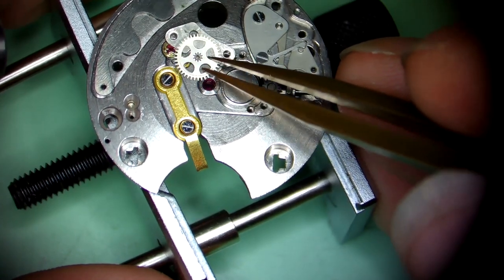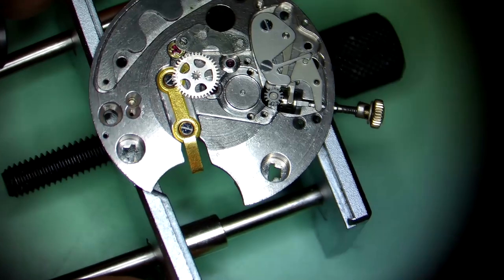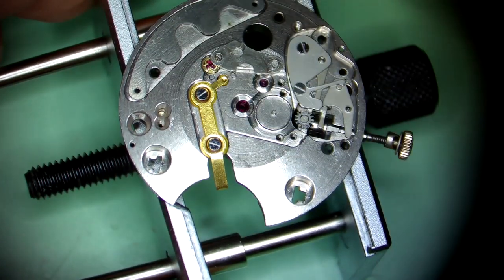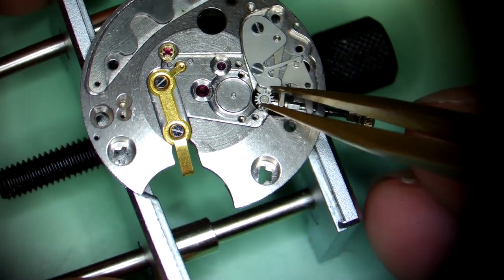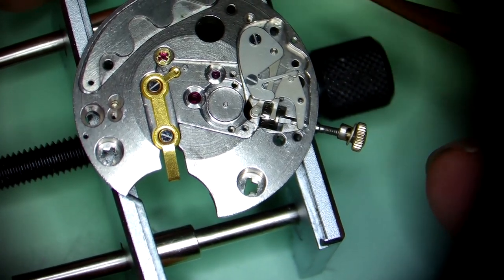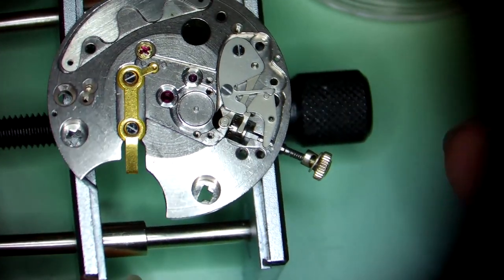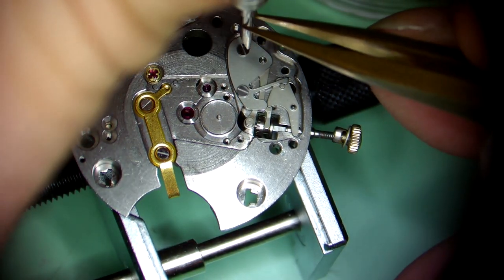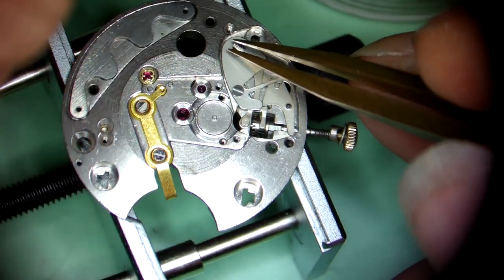This movement was doused in oil. I've rarely seen a movement so covered in oil. Every piece is shiny with oil. Somebody really went to town, which is the absolute incorrect thing to do with all watches, but especially these electric watches because their amplitude is so low. You have to really be careful about how you oil the watch.